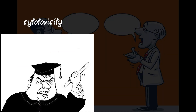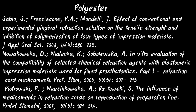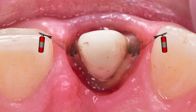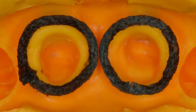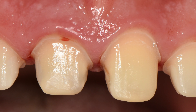There is no ideal substance for the impregnation of cords. Some scientists discuss cytotoxicity, others discuss the effect on polymerization of impressions — these disputes among scientists are about 60 years old. Because many authors report a negative effect of impregnations on the polymerization of polyether and silicone impression materials, we recommend thoroughly rinsing the gingival sulcus after removing the cord and avoiding direct contact of the impression materials with retraction agents.